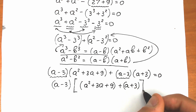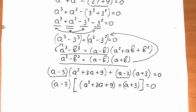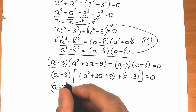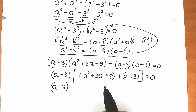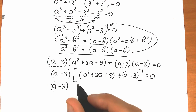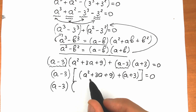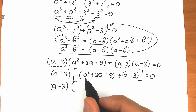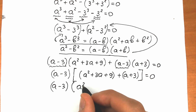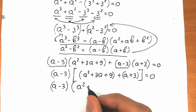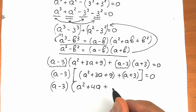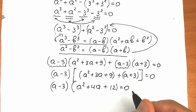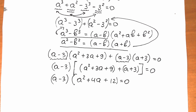We can factor out (a - 3) from both terms: (a - 3)[(a² + 3a + 9) + (a + 3)] = 0. Simplifying inside the bracket: a² + 3a + a + 9 + 3 = a² + 4a + 12. So we have (a - 3)(a² + 4a + 12) = 0.